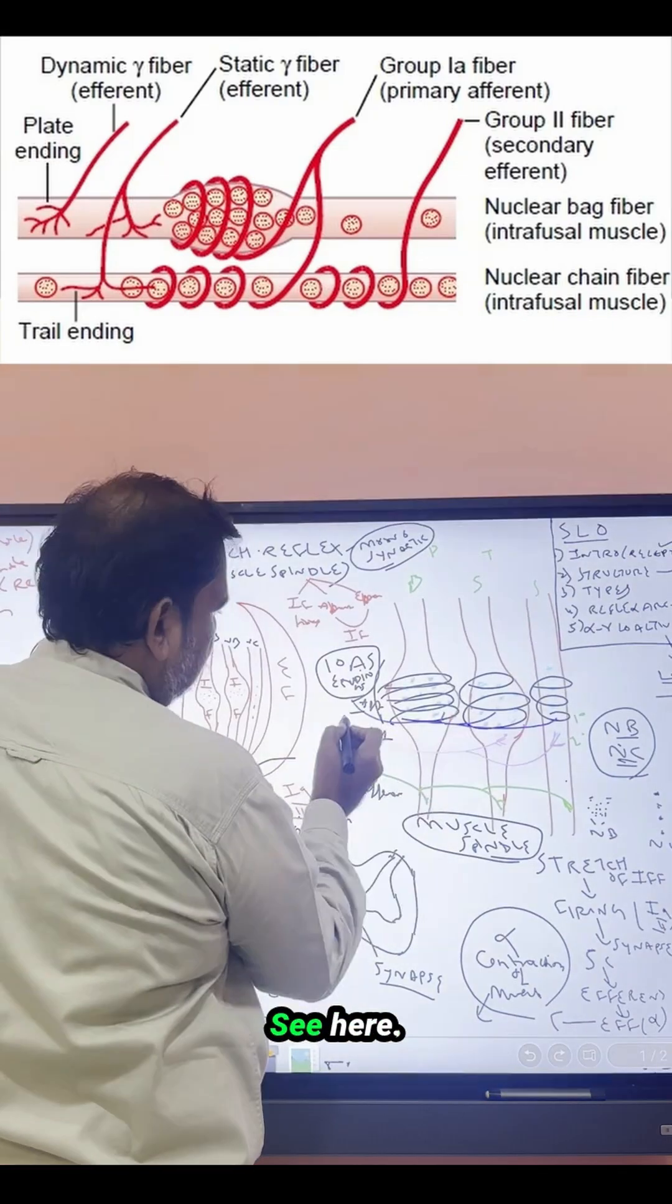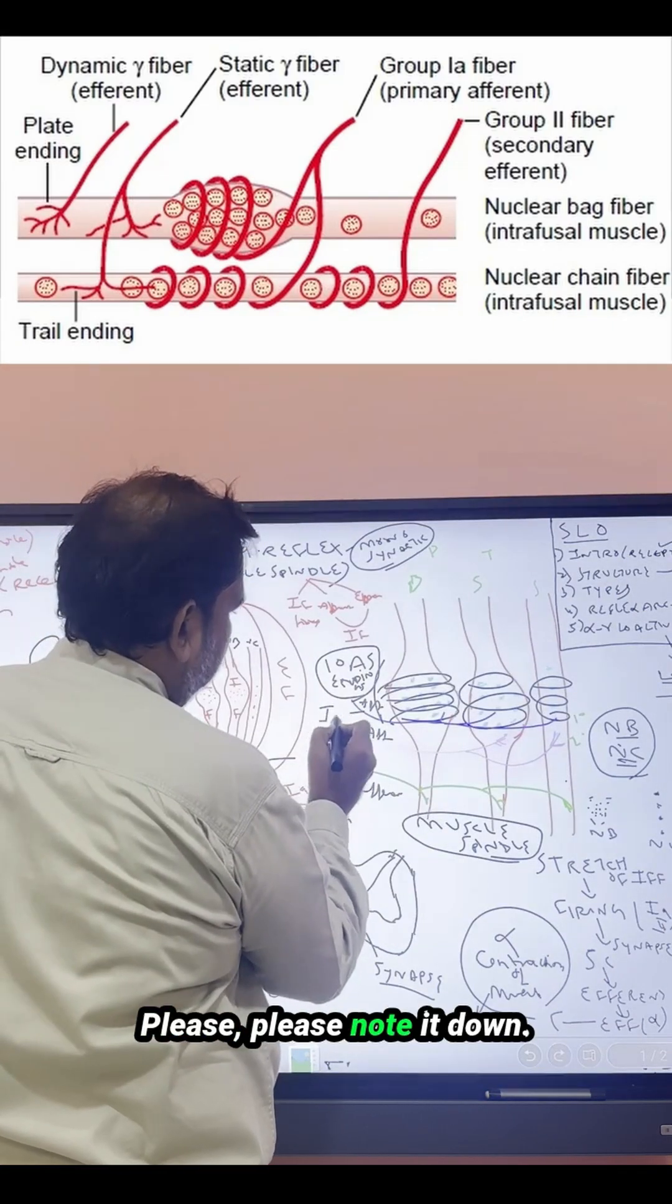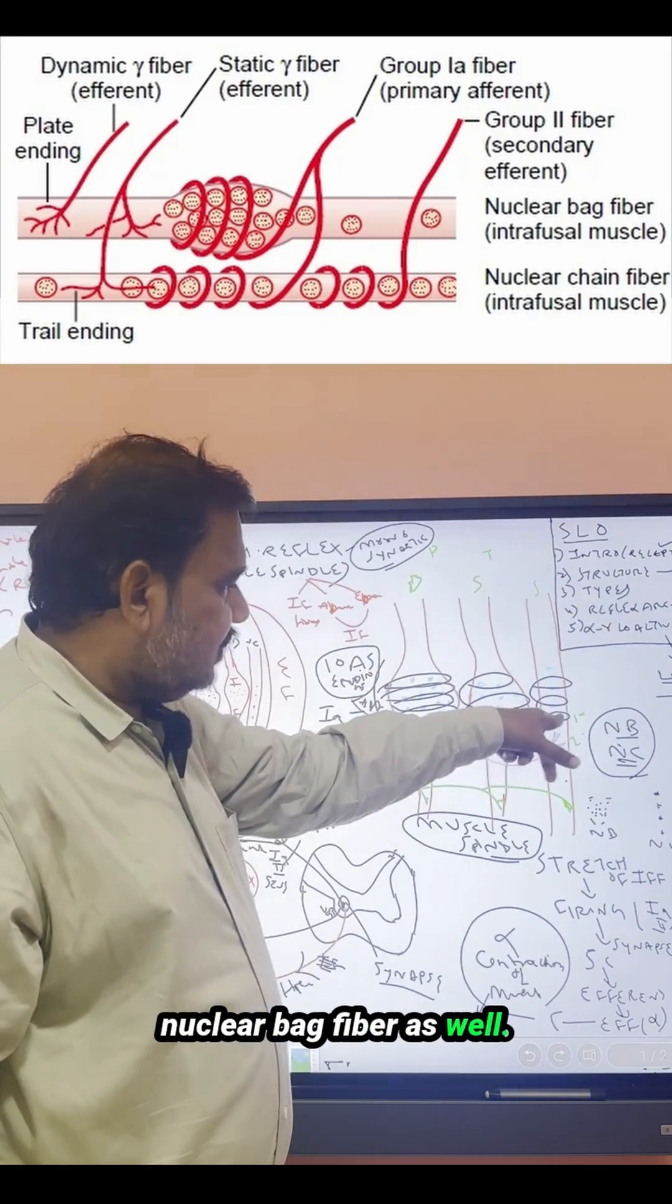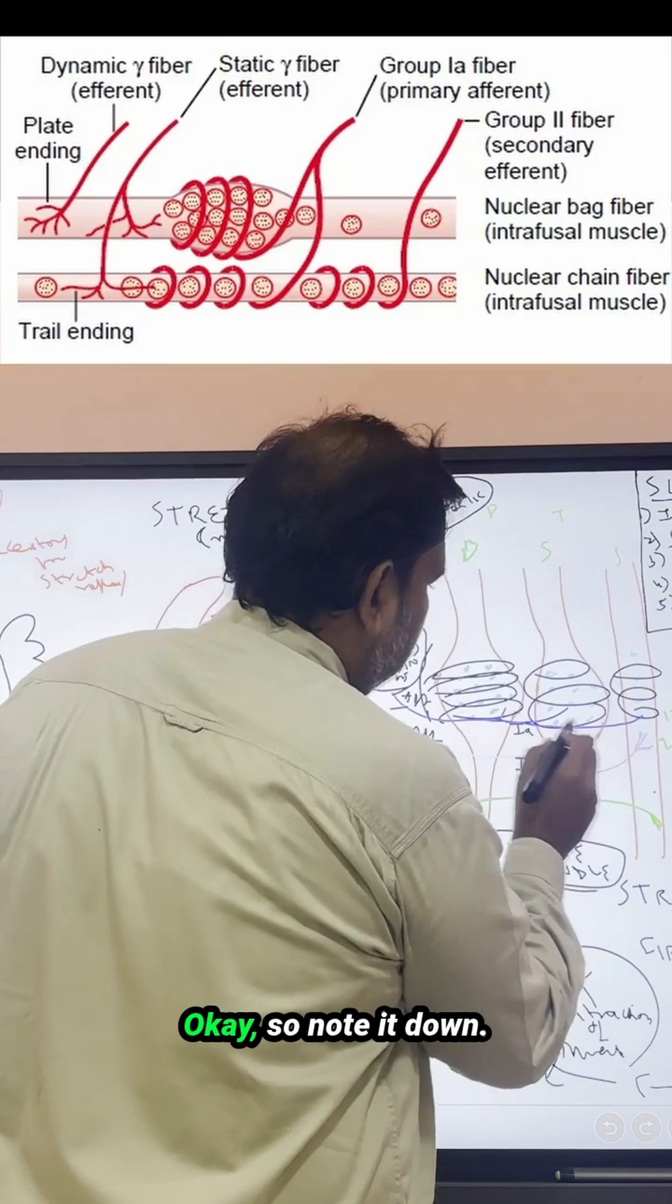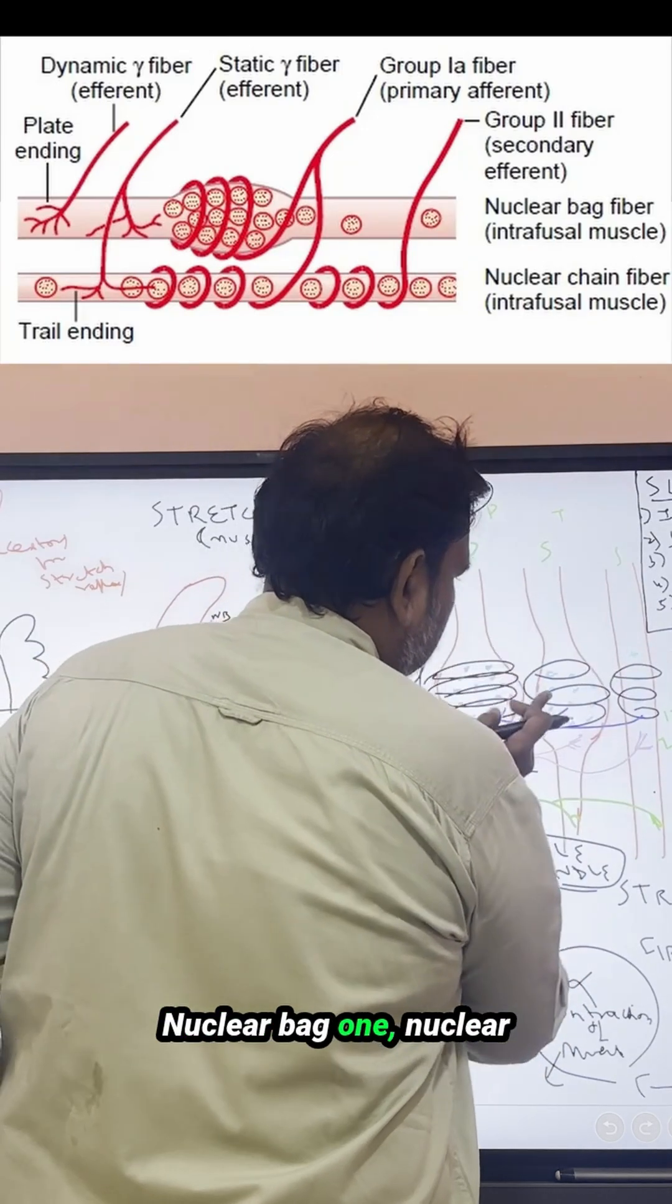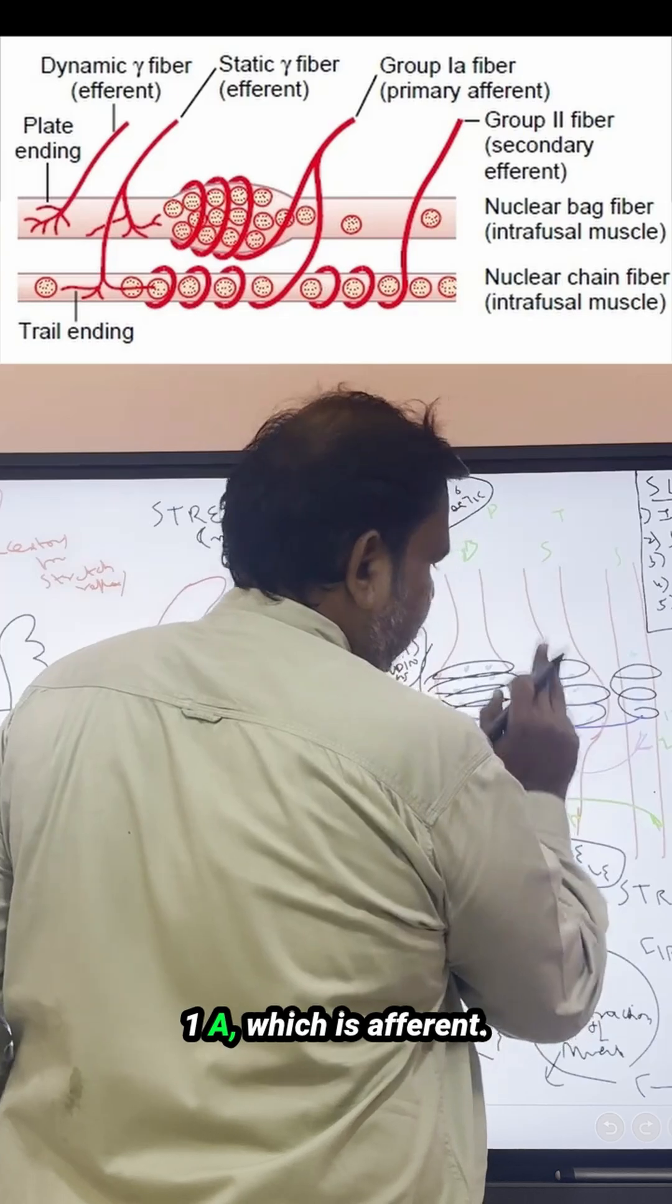I have drawn three, see here. 1A - please note it down. So 1A is supplying both nuclear bag fiber as well as chain fiber. Note it down. This one is two. So note it down. This blue color is supplying all the three: nuclear bag one, nuclear bag two, nuclear chain. 1A, which is afferent.